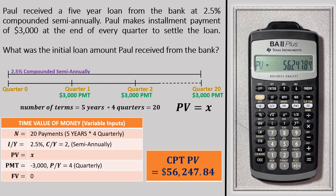So $56,247.84 is the total value of Paul's initial loan amount. That sums up this video on ordinary general annuity. If you liked this video, please give it a thumbs up. There are other videos related to annuities you can check out, and if it helped you, please consider subscribing. Thank you.